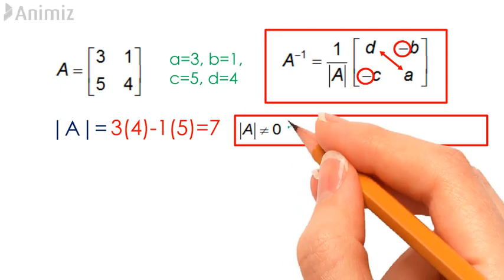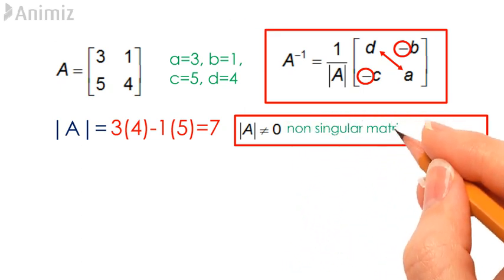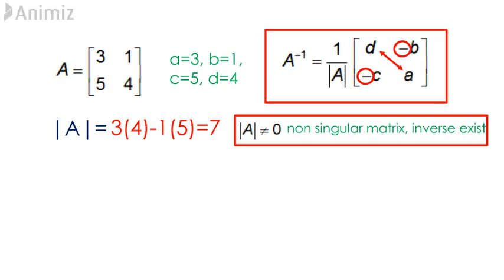Therefore, A is a non-singular matrix and the inverse of this matrix exists. Let's now proceed to finding the inverse of matrix A.